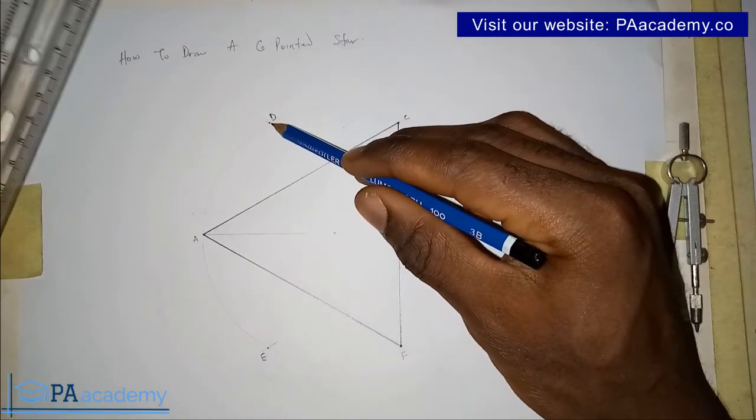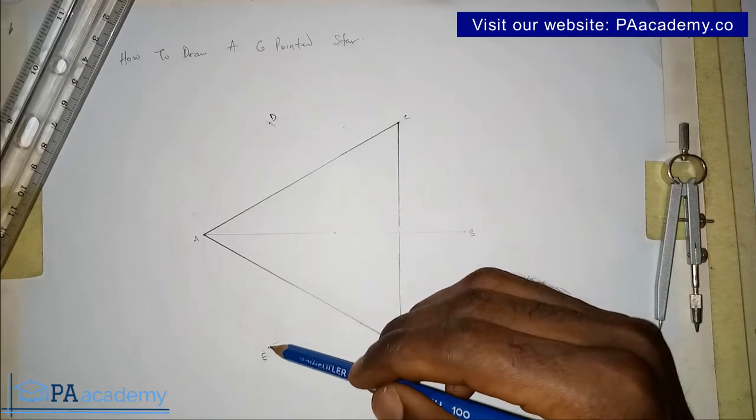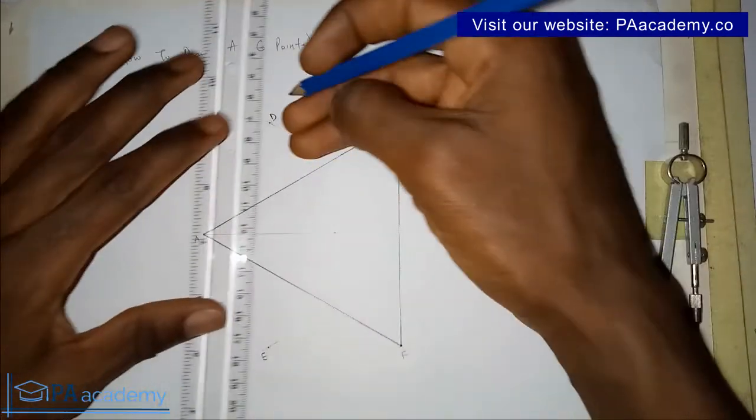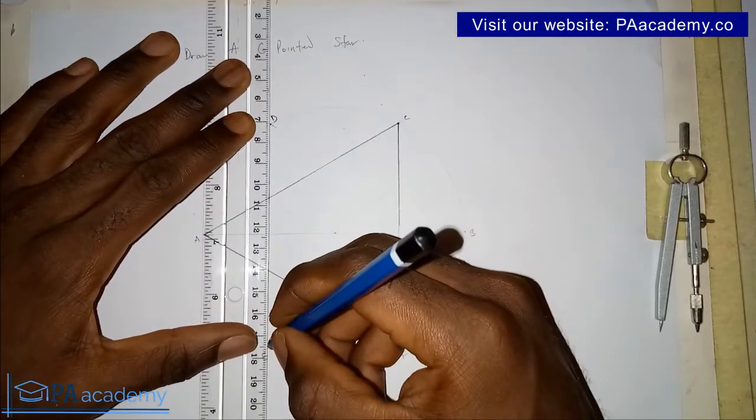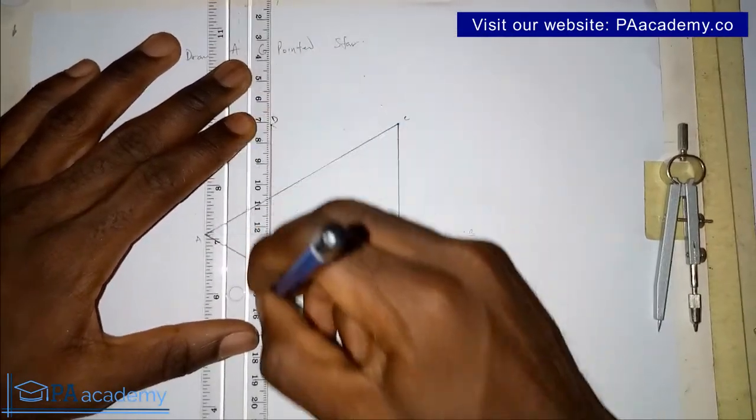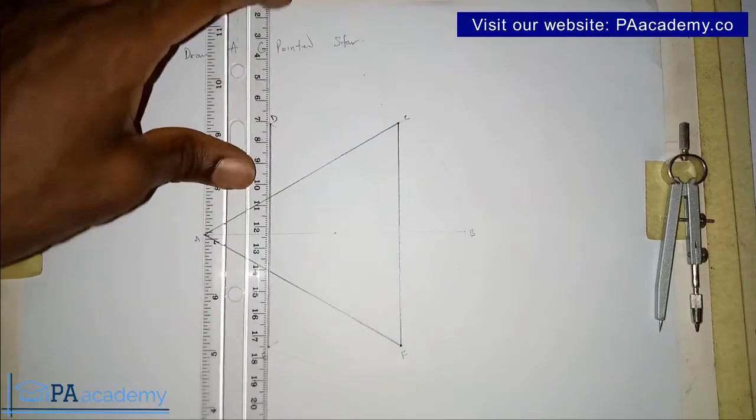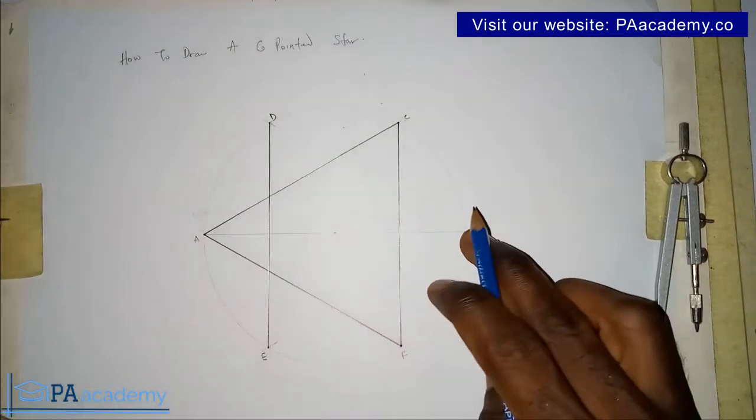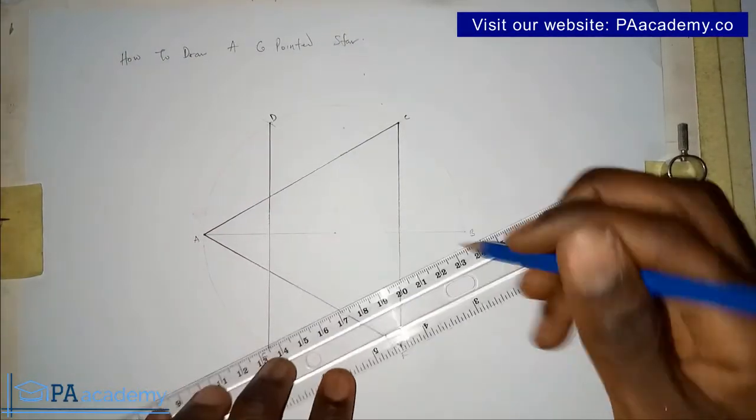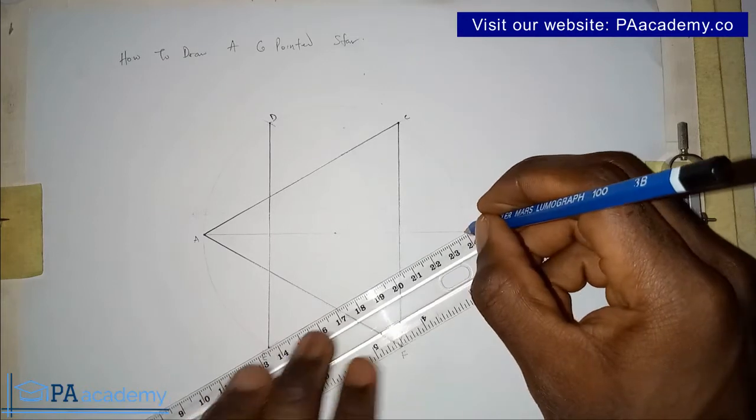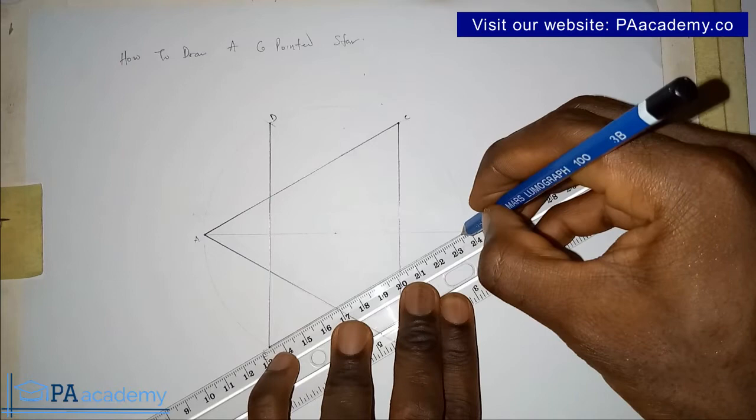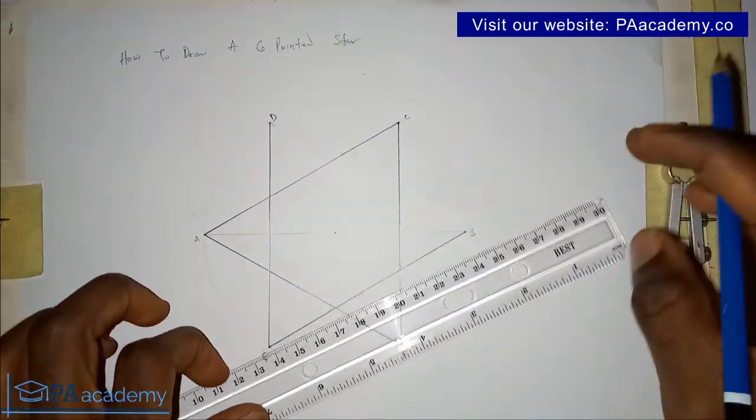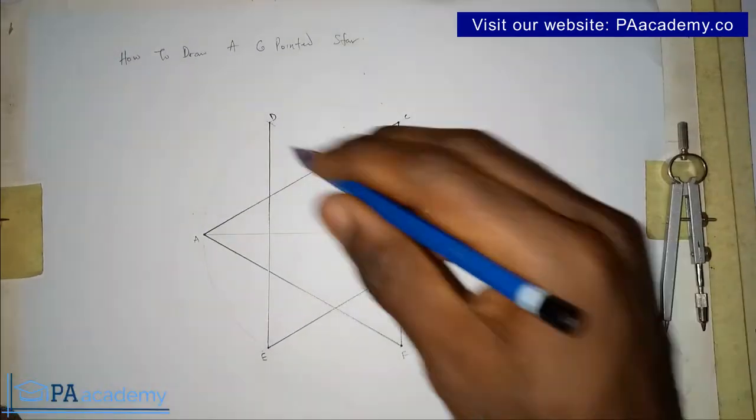So this is what we are having. Now we can now start from another point. So now let's start from point D again. So we are going to join point D to point E, skipping point A. Now from point E to point B, skipping point F. And then for the last term, point B to point D.